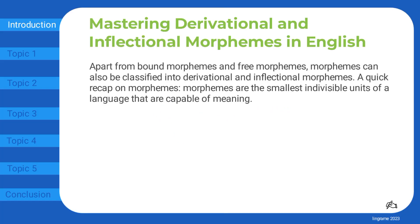Mastering derivational and inflectional morphemes in English. Apart from bound morphemes and free morphemes, morphemes can also be classified into derivational and inflectional morphemes. A quick recap on morphemes: morphemes are the smallest indivisible units of a language that are capable of meaning.